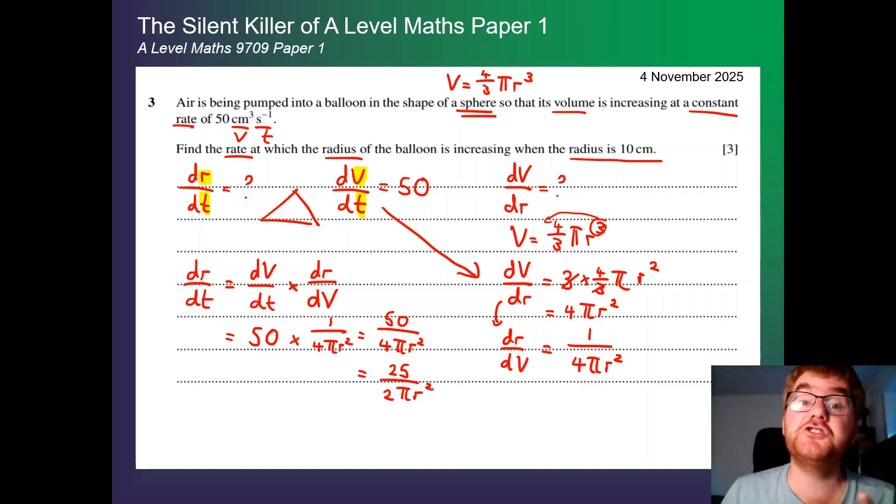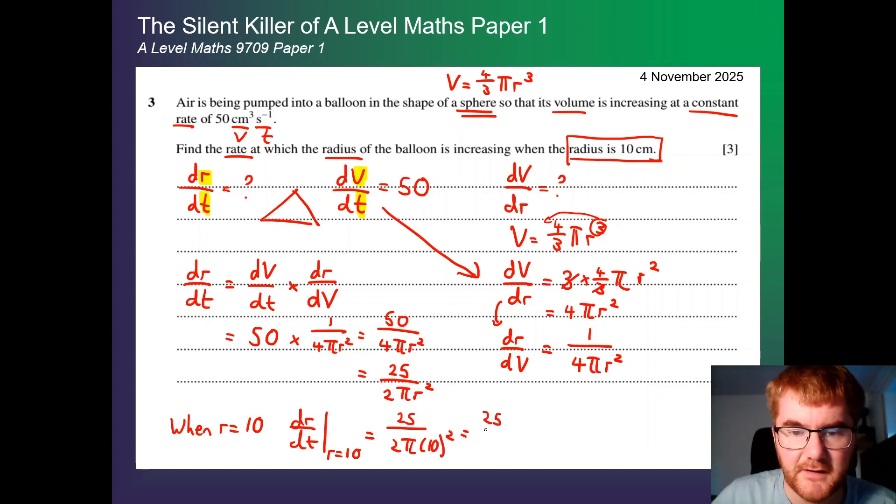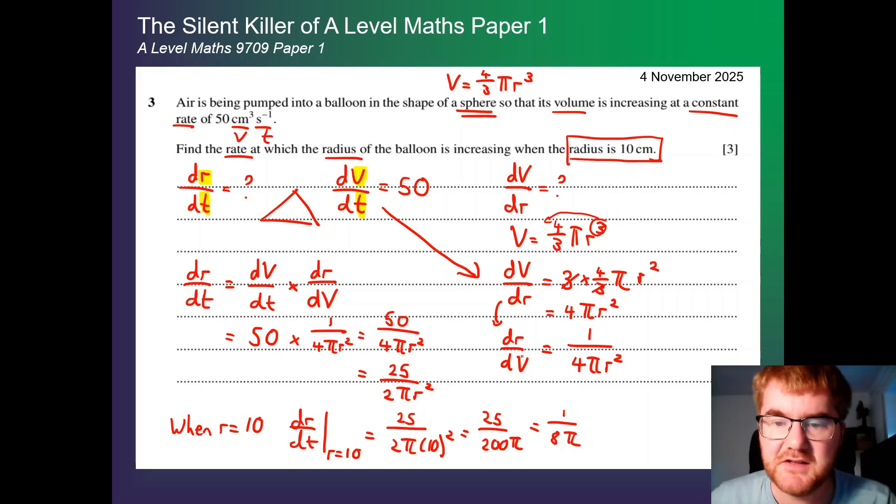Now, we're not quite finished here. We've just got the general rate in which the radius is increasing. But we want to find it happening when the radius is 10. So when r is equal to 10, dr by dt when r is equal to 10. So we just put in for r 10. So we get 25 over 2 pi 10 squared. That gives us 25 over 200 pi. Again, we can simplify a fraction just like always. And that gives us then 1 over 8 pi as an exact value, which I generally prefer for these kinds of questions. So our final answer here is 1 over 8 pi.